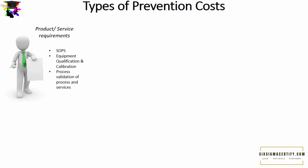Another prevention cost is equipment qualification and calibration — the administration, maintenance, and management of these activities. Equipment qualification and calibration are processes in which we try to put the equipment or machine at its highest level of performance, ensuring that results are true and accurate. Calibration is done daily for weighing devices and weekly, monthly, bi-annually, or annually for other machines. Records must be preserved.